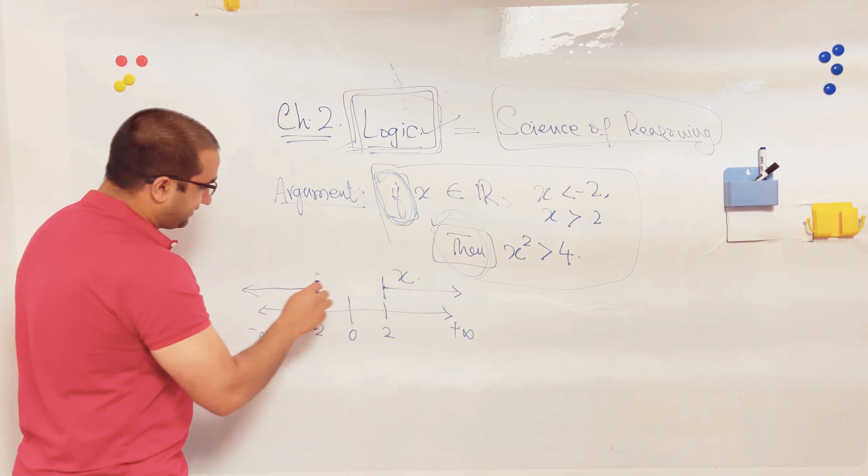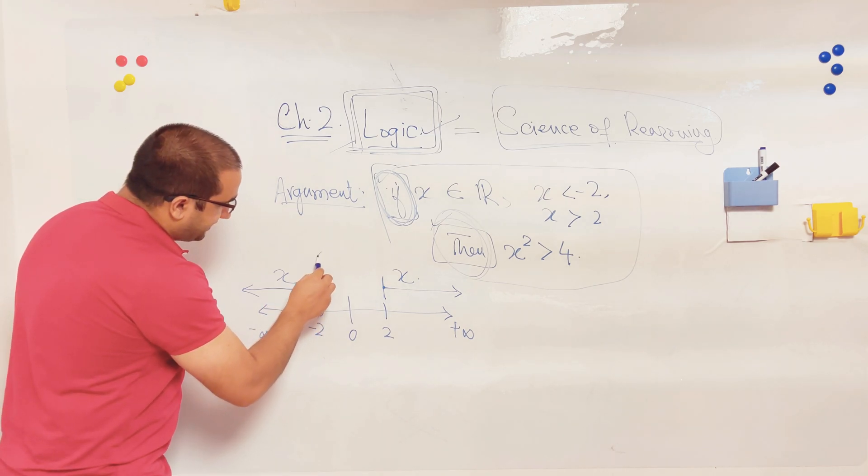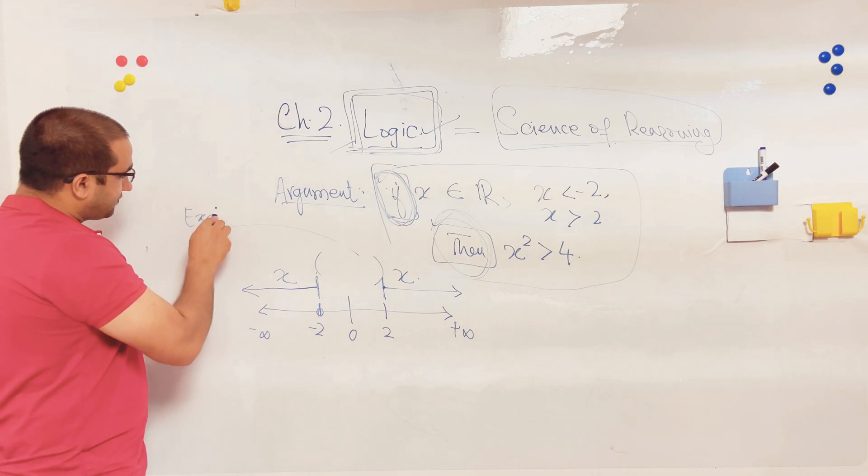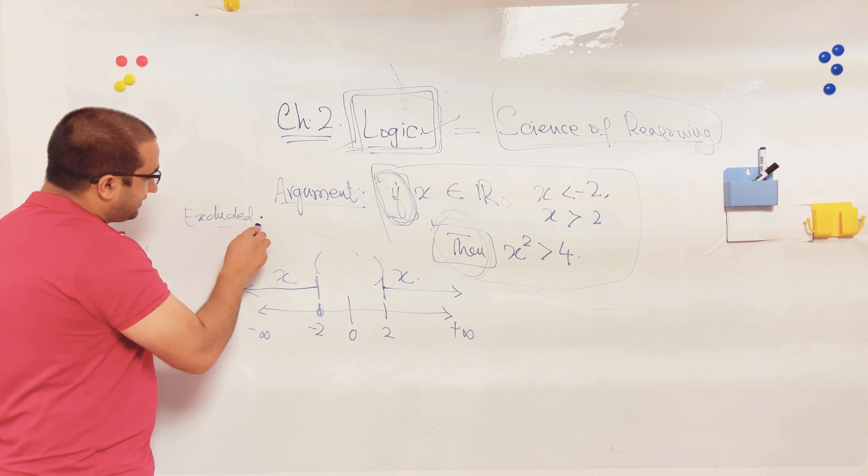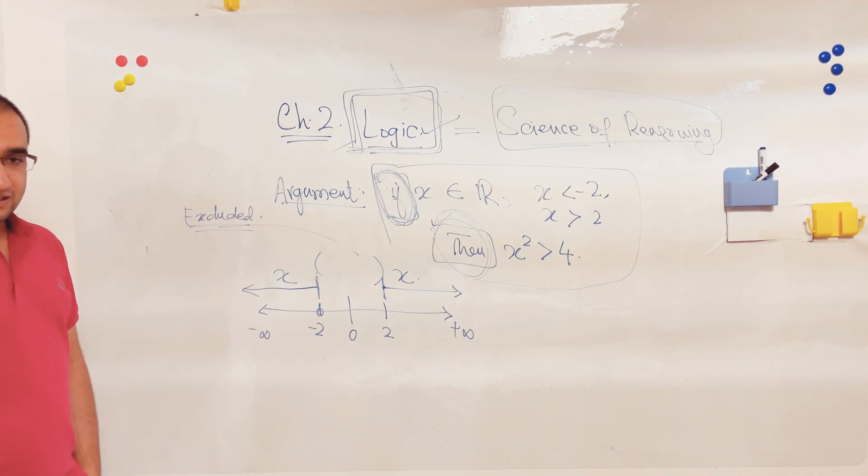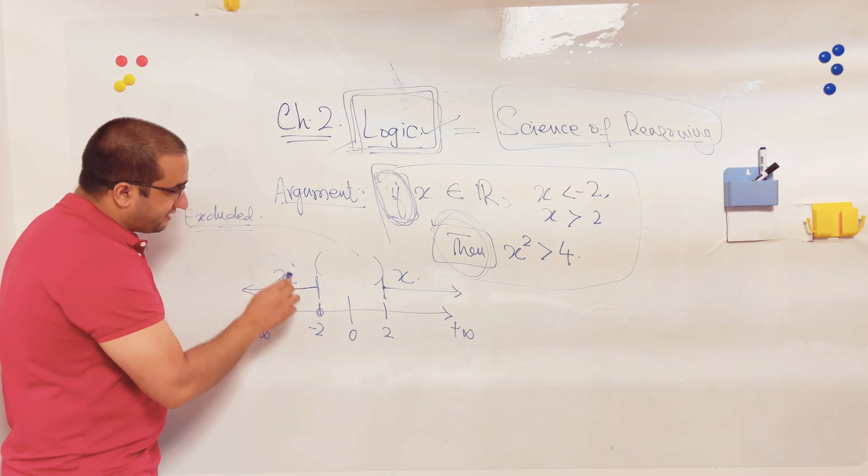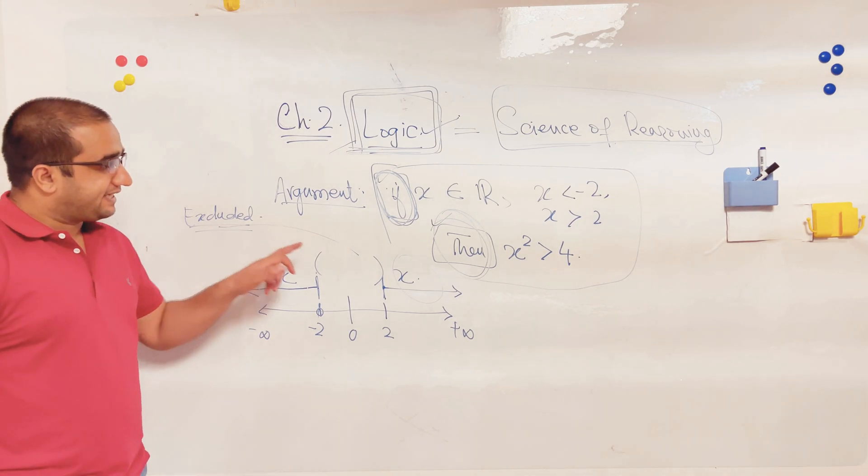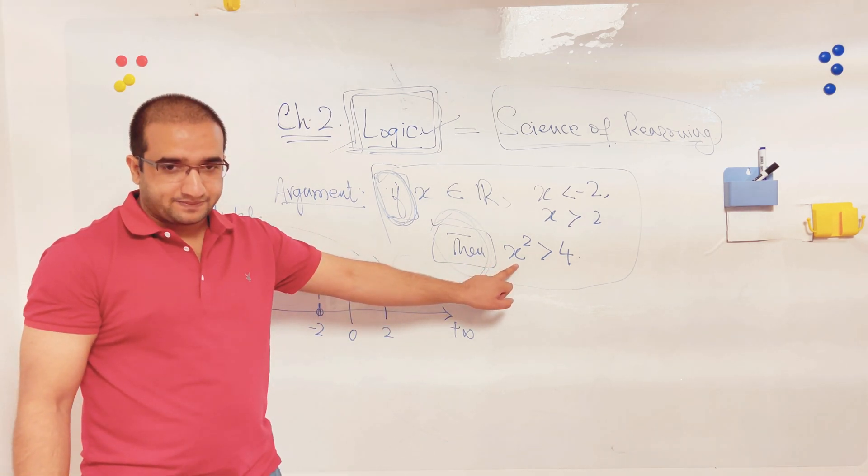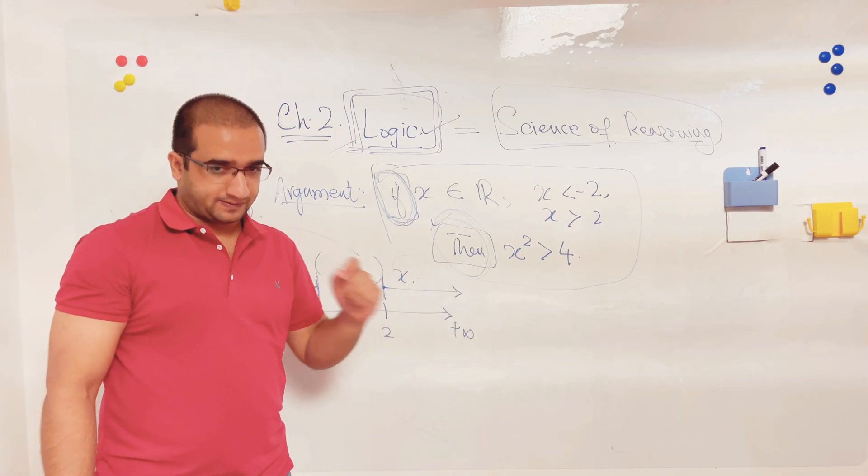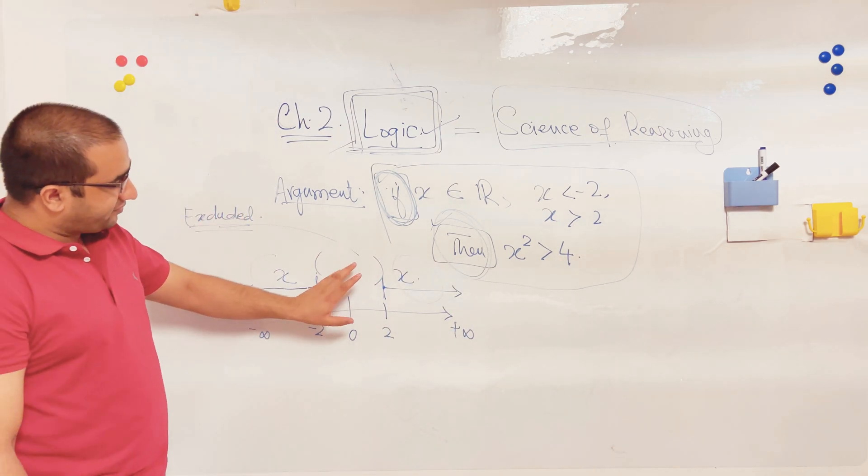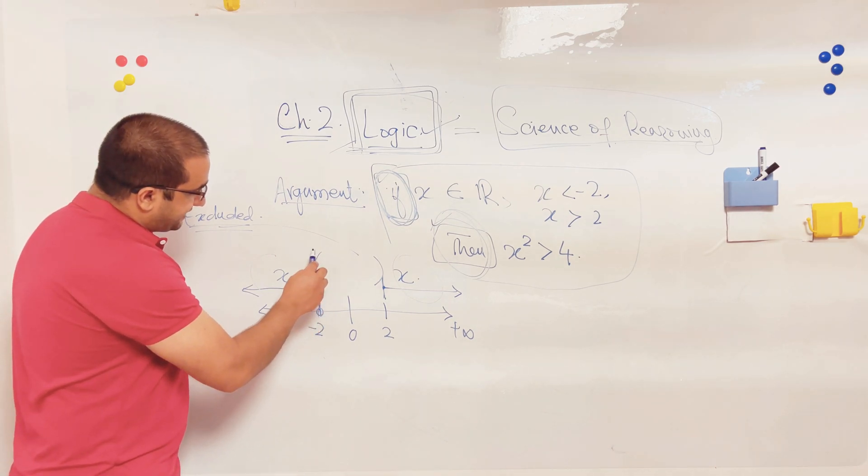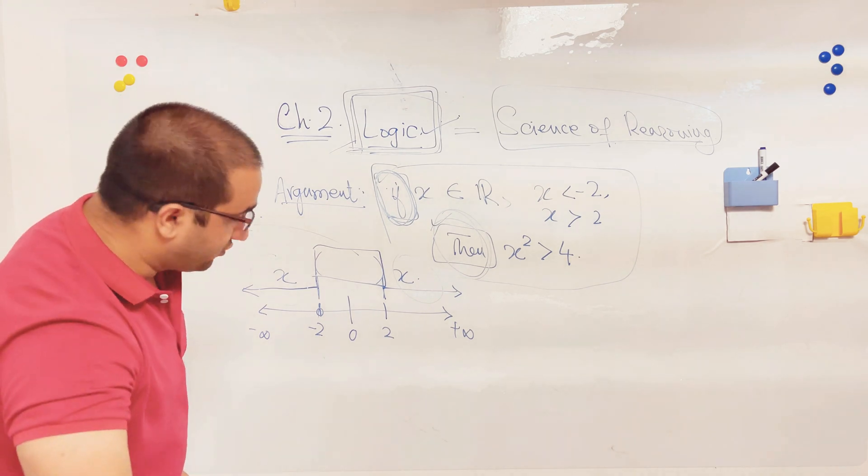This is x, this is x, this is x, but this region I have excluded. Then whatever the value of x is from this region or from this region, when I take the square of x, it will always be greater than 4. I can prove it from the real line.